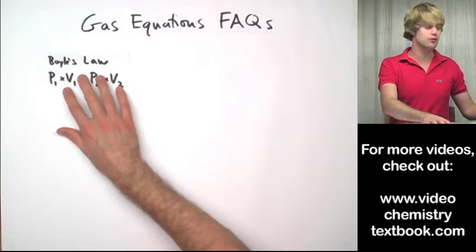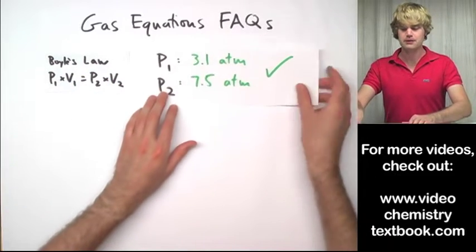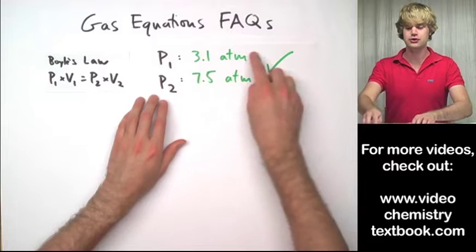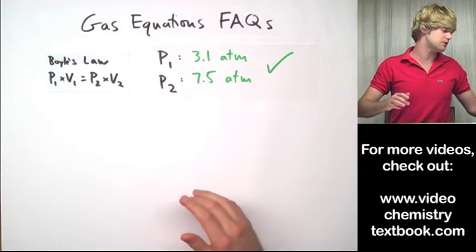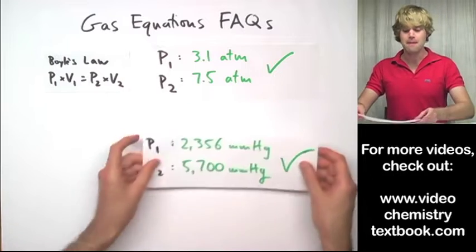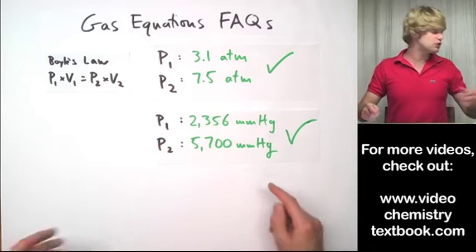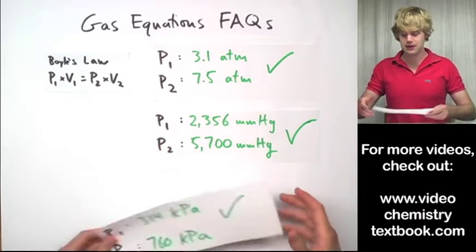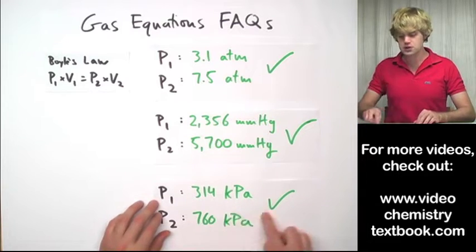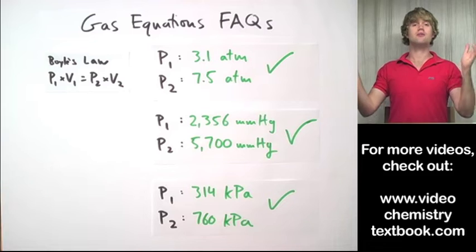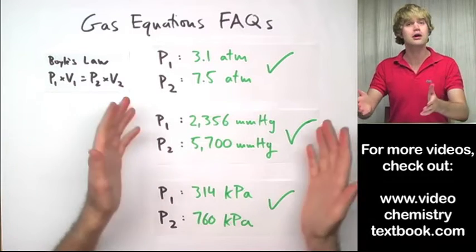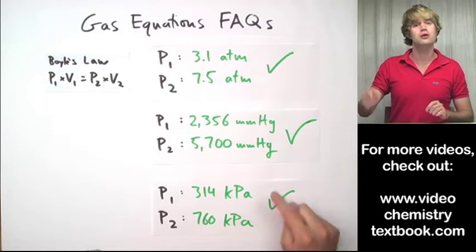So let's say that we're solving for Boyle's Law here. It would be totally fine if P1 and P2 are atmospheres, just as long as they're both atmospheres. Or they could be millimeters of mercury, that's fine too. Or they can be in kPa, kilopascals, just as long as they are both in kilopascals. They can be in any other pressure unit in the world that you can think of too, just as long as they're both in the same one.